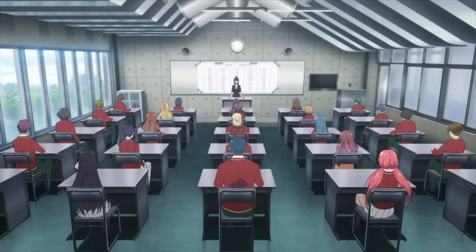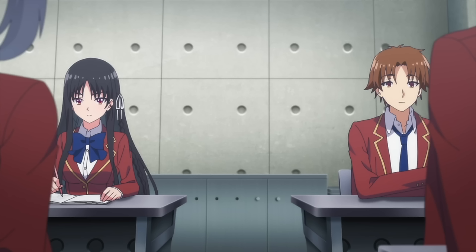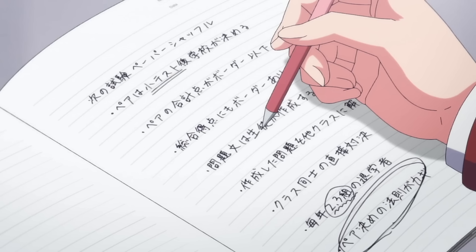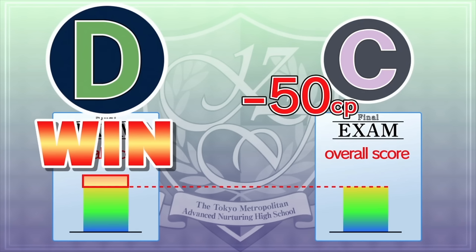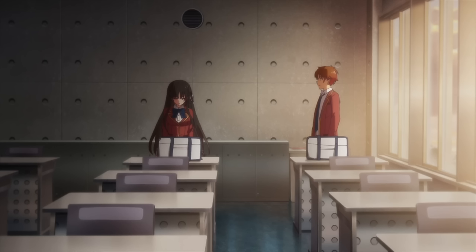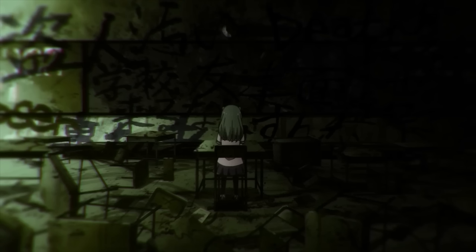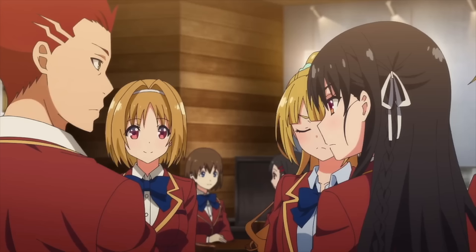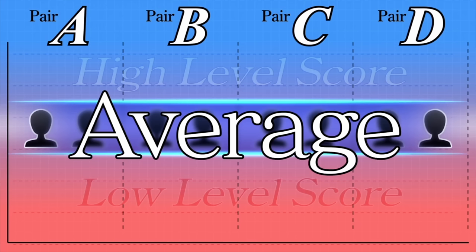Ms. Chabashira then lets the class know about their final exam, the paper shuffle. Two students will be paired up and must score above 60 points as a pair, or both will be expelled. The pairs will be determined through a mini-test. Each class makes the questions that will be answered by another class. The classes go head-to-head, and whichever class scores higher will steal 50 class points from the other. Suzune then tells Kiyotaka about Kikyo's past — they went to the same middle school. An incident imploded a class, and rumor had it that it was Kikyo's doing. They devise a plan to have some students flunk the mini-test, so the highest scorers get paired with the lowest scorers, creating an average threshold.